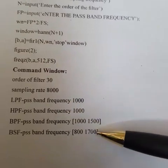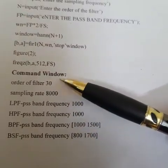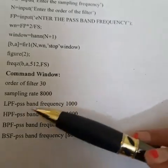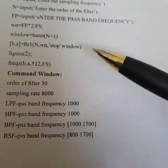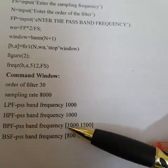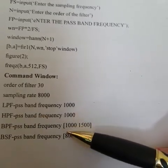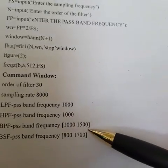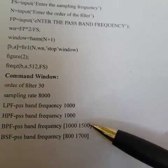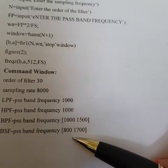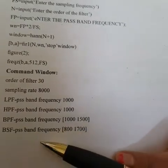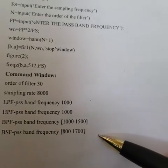These are the values you will enter in the command window. Order of the filter can be 30 or 40, since FIR filter can be designed using higher orders. Sampling rate give 8000. For low pass filter, give passband as 1000. High pass filter passband can also be given as 1000. These values can be changed — this is just an example. For band pass filter, give two passband frequencies: enter square bracket [1500 ...] for lower and higher cutoff. For BSF, the range is 800 to 1700.